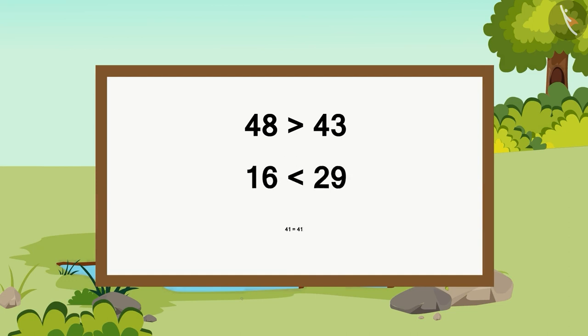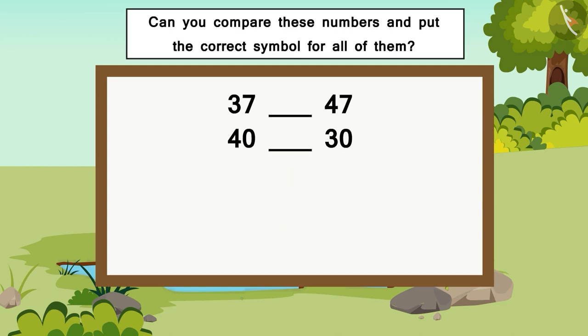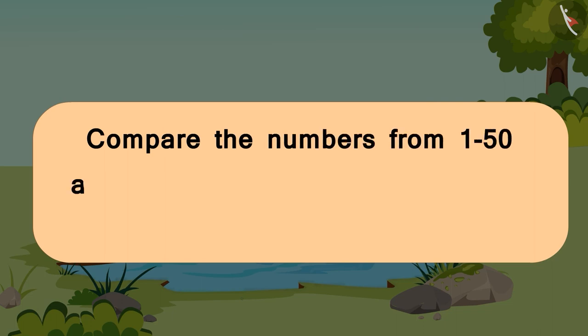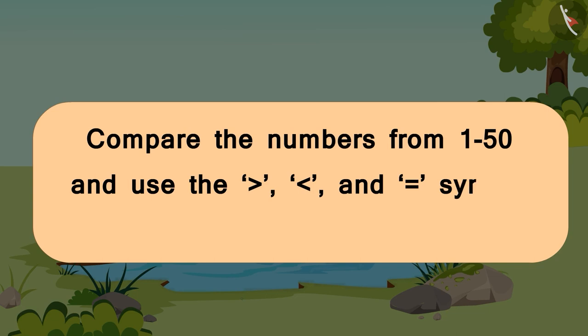So students, did you see how we can use the symbols greater than, less than, and equals to? You have to be careful — if the number on the left side is bigger, smaller, or equal to the number on the right, then you can choose the correct symbol and compare the numbers properly. Can you compare these numbers and put the correct symbol? You can pause the video and find the solution. In this video, with the help of Crocs, we learnt how to compare numbers from 1 to 50 and use the greater than, less than, and equals to symbols properly. Hope you liked this video.